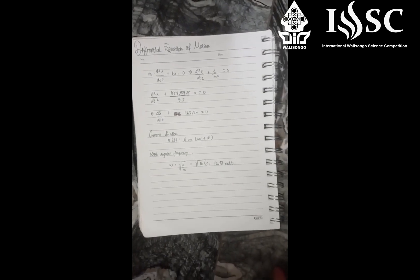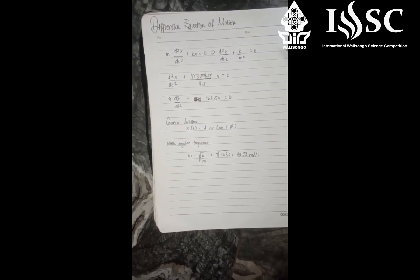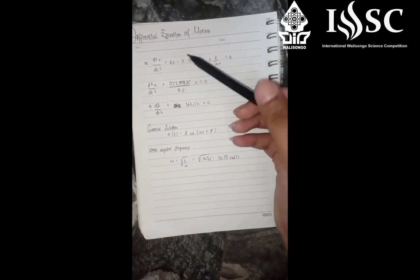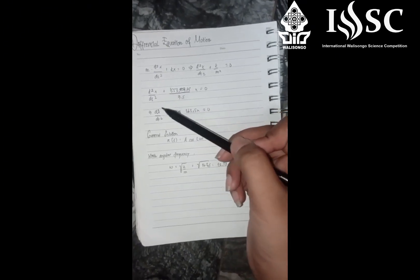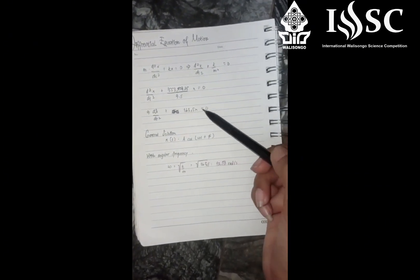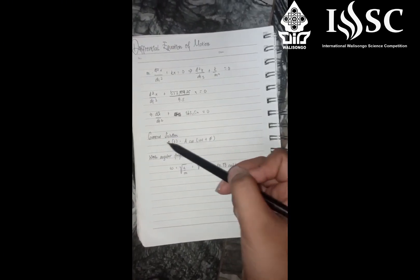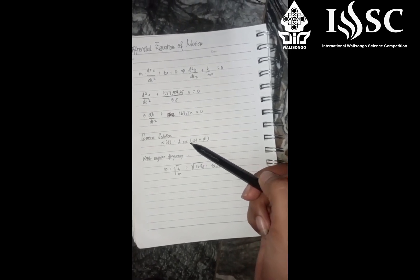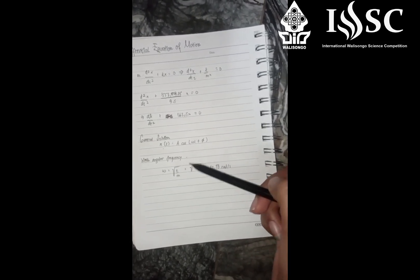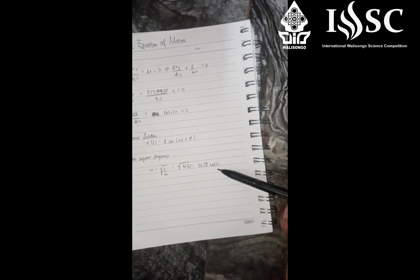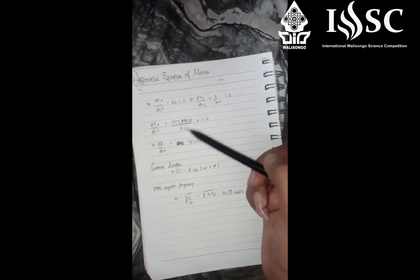We are now going to talk about the differential equation of motion. This vertical motion can be modeled with a second-order linear differential equation. The general solution for the harmonic oscillator is x(t) equals A cos(ωt + θ), with angular frequency omega equal to 12.78 radians per second. After being slightly disturbed, the spring system begins oscillating vertically — this is called Simple Harmonic Motion, or SHM — a back-and-forth movement where the restoring force is proportional and opposite to the displacement.